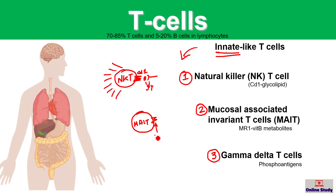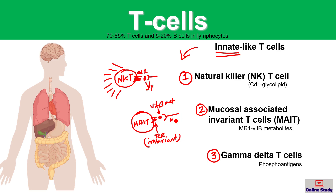MAIT cells are called invariant because the T cell receptor (TCR) expressed on their surface is not as variable as that of adaptive T cells. They recognize vitamin B metabolites when an antigen-presenting cell expresses MR1 in the context of vitamin B metabolites. These metabolites are products of bacteria and can be recognized by the TCR of the MAIT cell, which activates the MAIT cell to help kill or clear bacteria from the body.